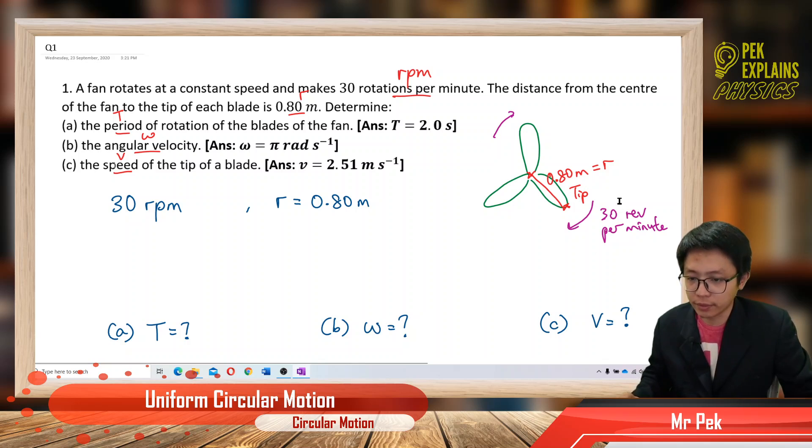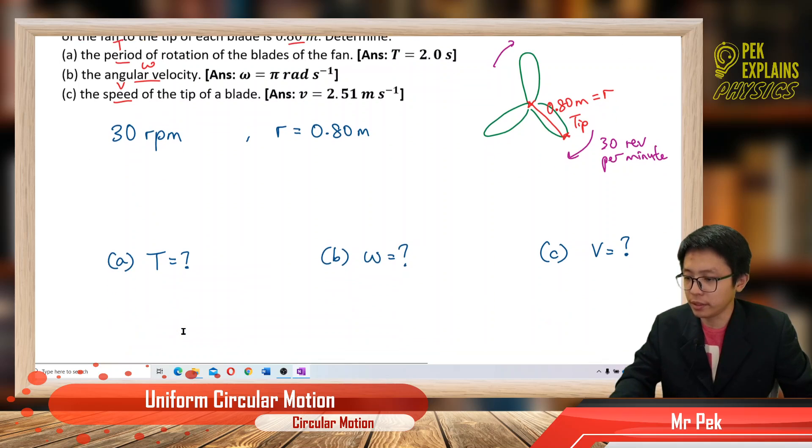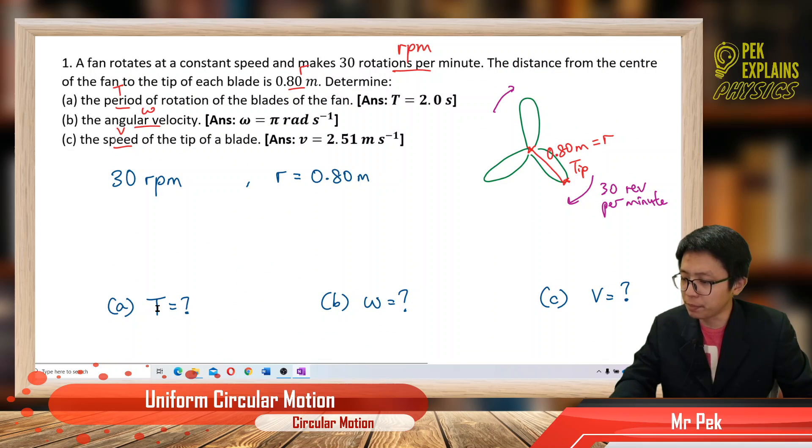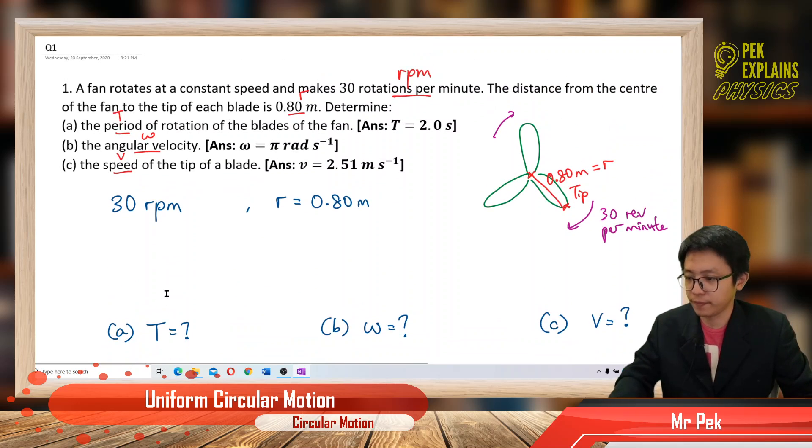So we have 30 RPM, radius, want to find the period. To find the period we need to find omega first.